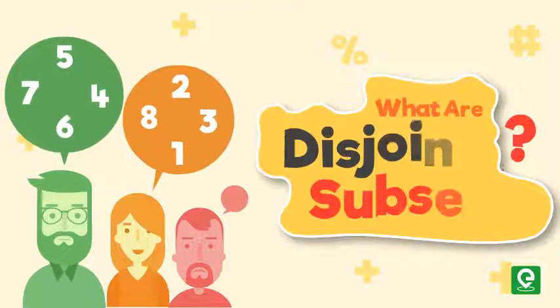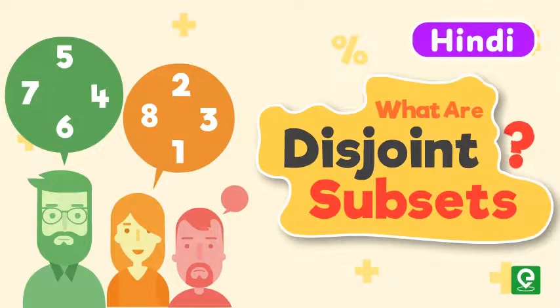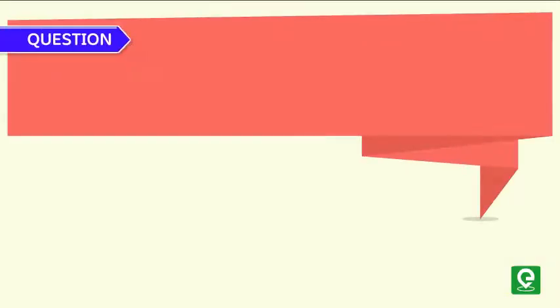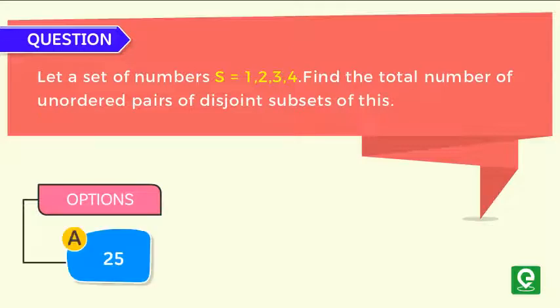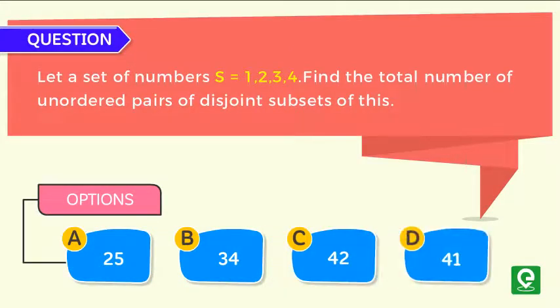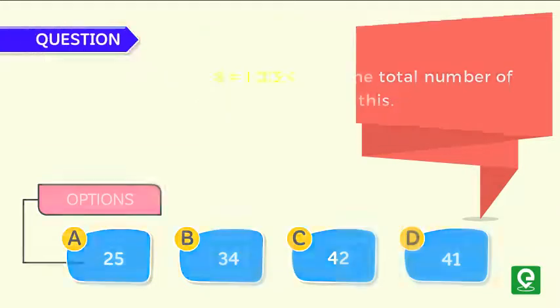What are disjoint subsets? Question: Let a set of numbers S equal 1, 2, 3, 4. Find the total number of unordered pairs of disjoint subsets of S. Options are: a) 25, b) 34, c) 42, d) 41.